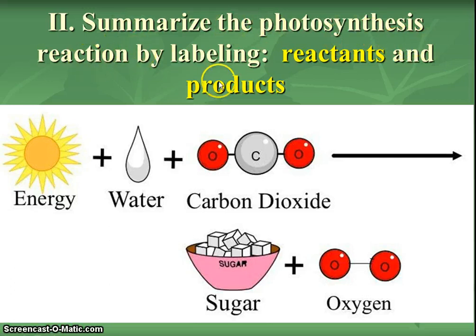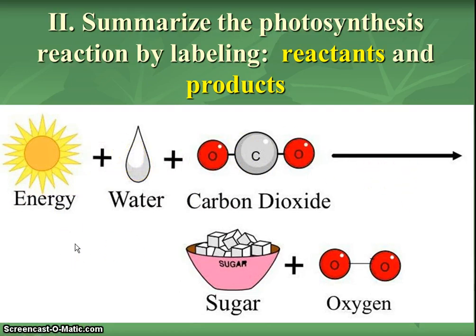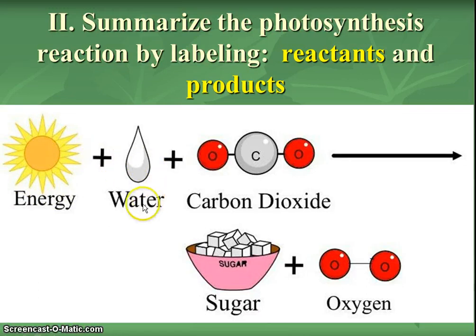The photosynthesis equation — we're going to label two different things: the reactants and the products. You can draw just the words or add cute symbols above them, but you need the words and the symbols between them. The first thing in a formal photosynthesis equation is energy, and because it comes before the big arrow in this reaction it is a reactant. Next, plus water — also before the arrow and required for photosynthesis, so also a reactant. And lastly, carbon dioxide is also a reactant required for photosynthesis.